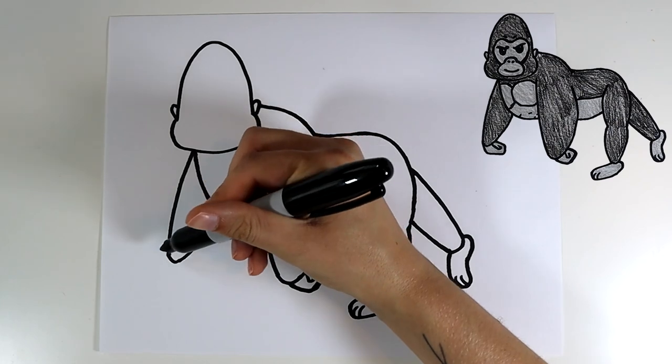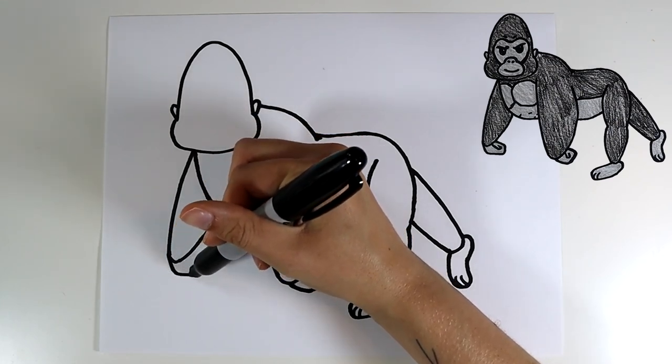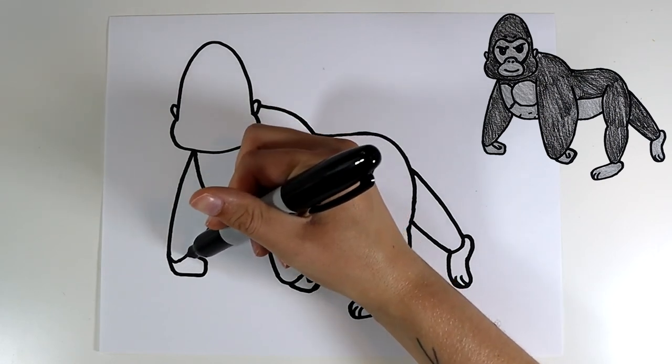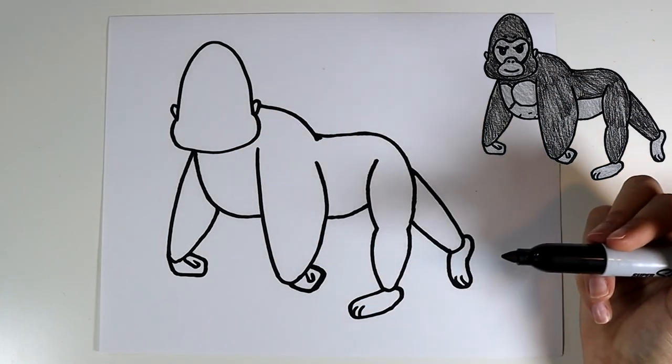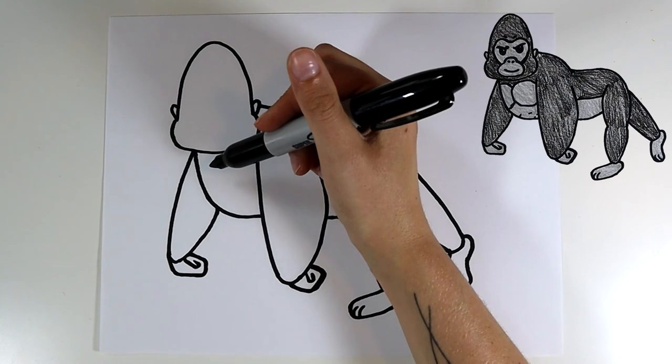Then on this one, goes down, cross, over, back. And again, we're going to do that kind of rectangle that doesn't connect all the way. And then we have to, of course, do some lines on the chest.